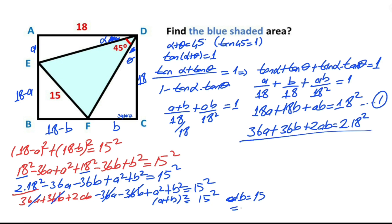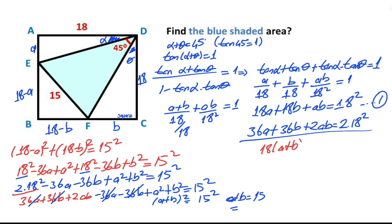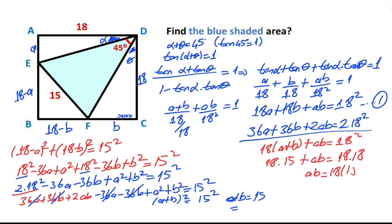Therefore a plus b equals 15 units. Plugging this back into the first equation: 18 times (a + b) plus ab equals 18 squared. Since a plus b equals 15: 18 times 15 plus ab equals 18 squared. Therefore ab equals 18 times (18 minus 15), so ab equals 54 units.